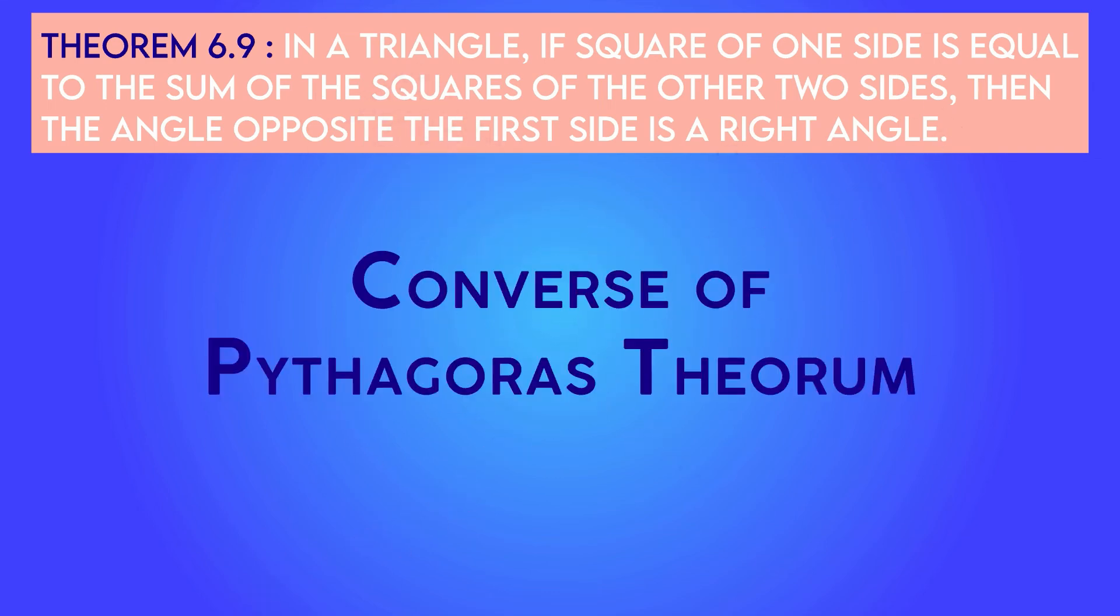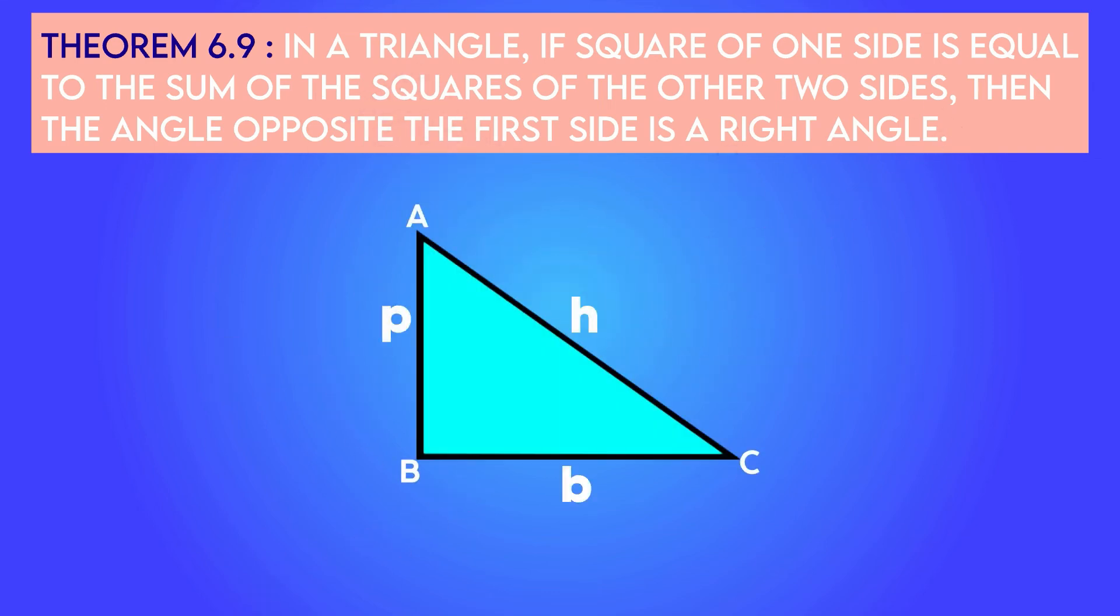Theorem 6.9: This is the converse of Pythagoras theorem. If in any triangle the square of one side equals the sum of the squares of the two sides, then the angle opposite to the first side is a right angle.